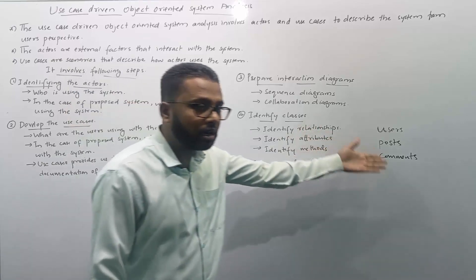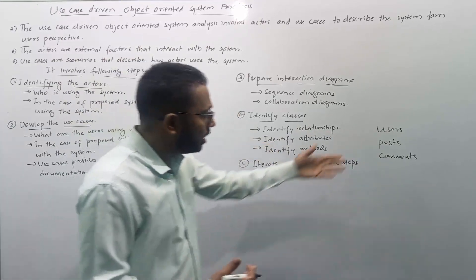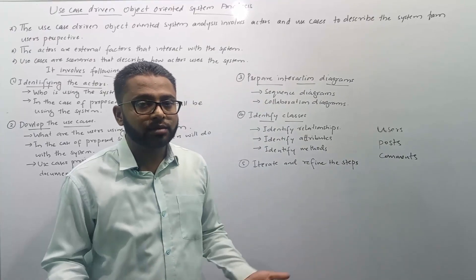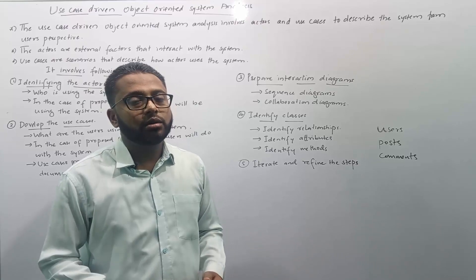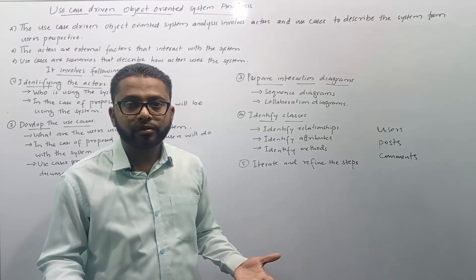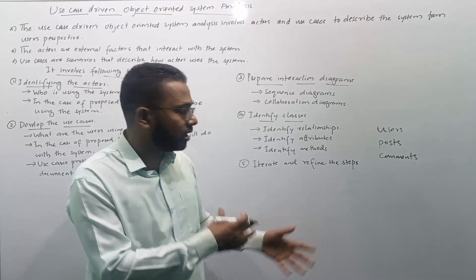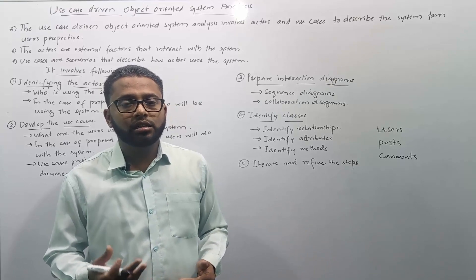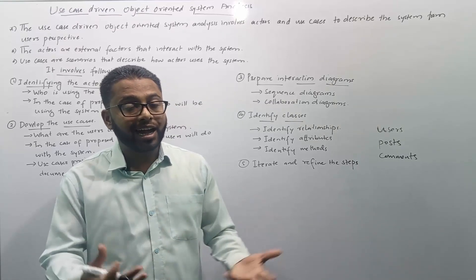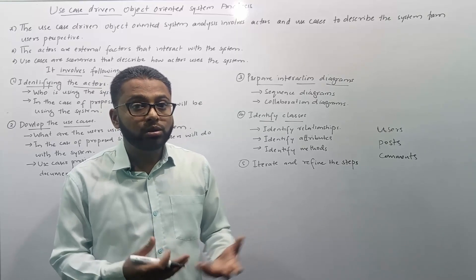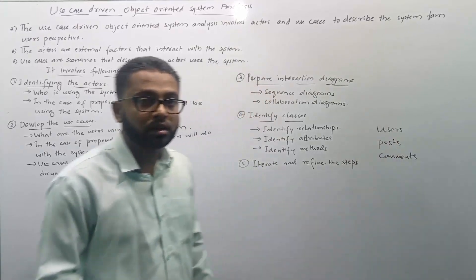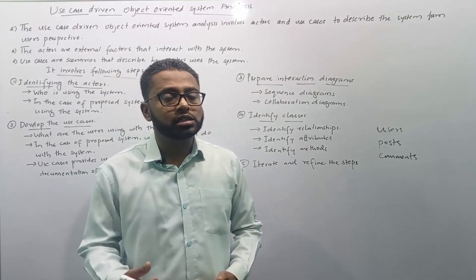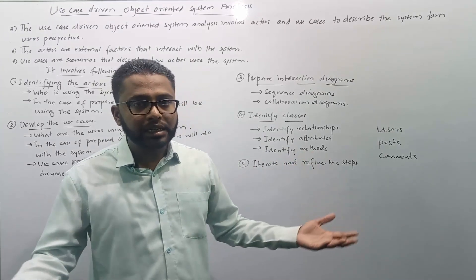We also need to identify attributes — the information stored in each class. For the Users class, attributes could be user ID, username, profile picture, and gender. For the Posts class, attributes could be post ID, post name, featured image, date and time published, likes, and comments. After identifying attributes, we identify methods — the functions that use those attributes to perform actions.